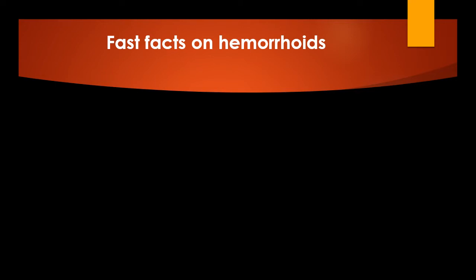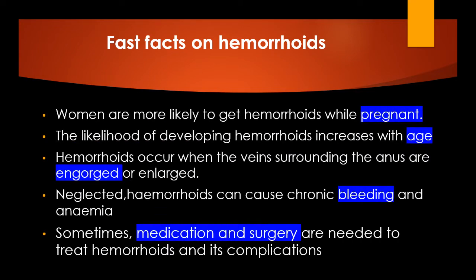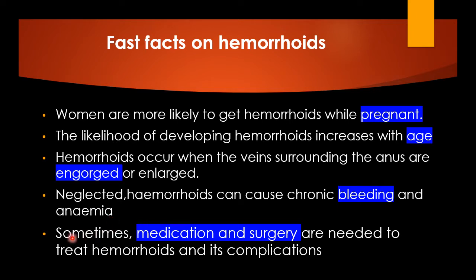Some fast facts on hemorrhoids: women are more likely to get hemorrhoids while pregnant. The likelihood of developing hemorrhoids increases with age, so in children we rarely see them. Hemorrhoids occur when the veins surrounding the anus are engorged and enlarged. If left neglected, hemorrhoids can cause chronic bleeding and anemia. Sometimes medication and surgery are needed to treat hemorrhoids and their complications.